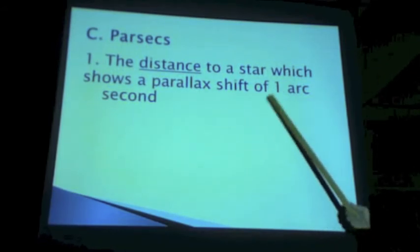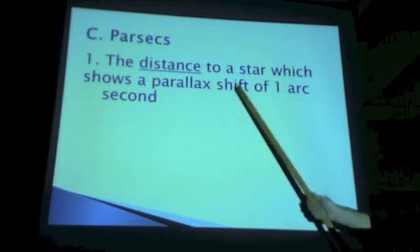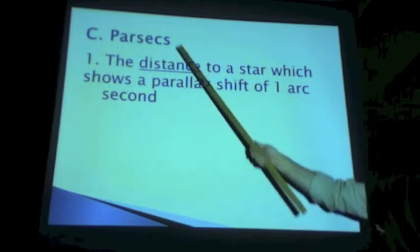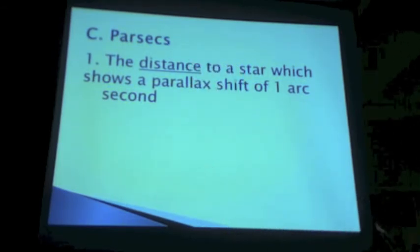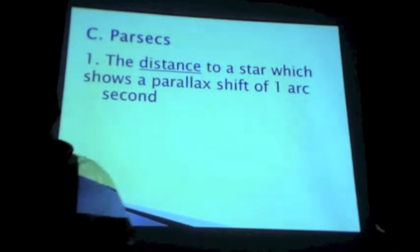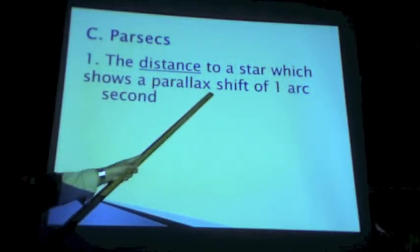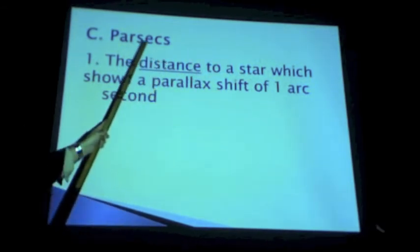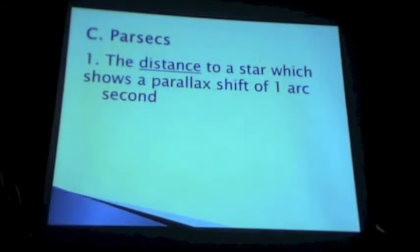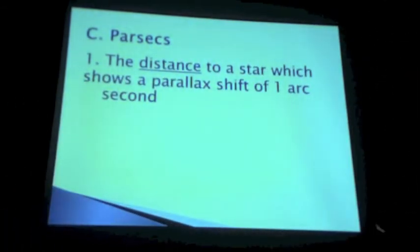And so what we've done is we've said, look, if there was an imaginary star that was at just the right distance from us to shift one arc second, the distance to that imaginary star would be called a parsec. There is no star there. There are no stars exactly one parsec away. It's just a made-up thing. But if there were a star there and it shifted exactly one arc second, we call that a parsec by definition. It's very useful.